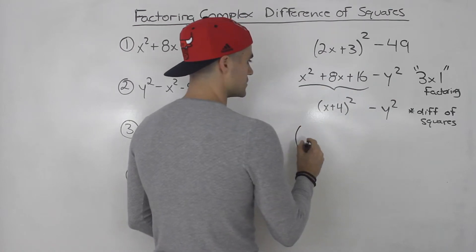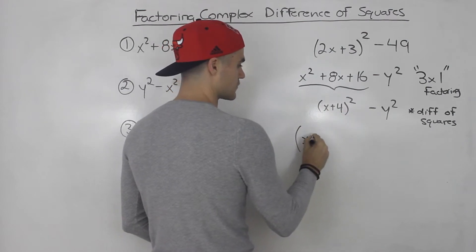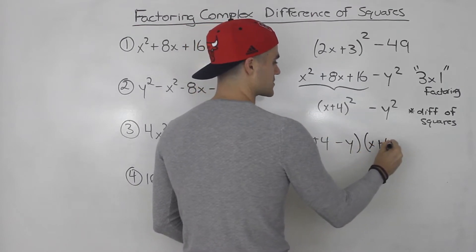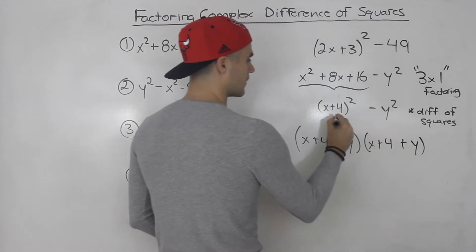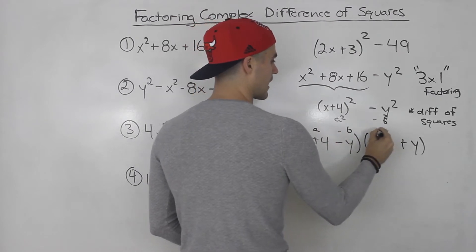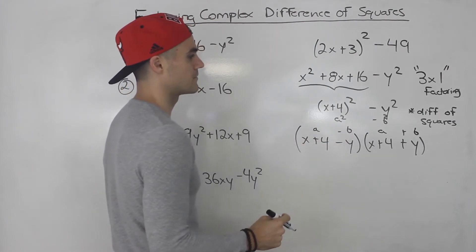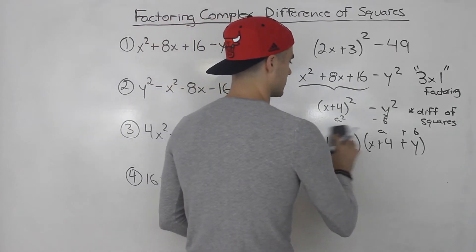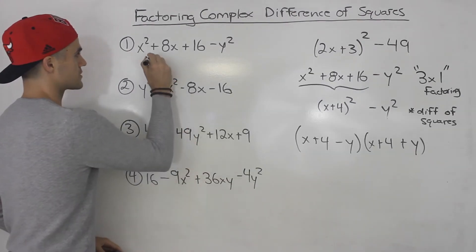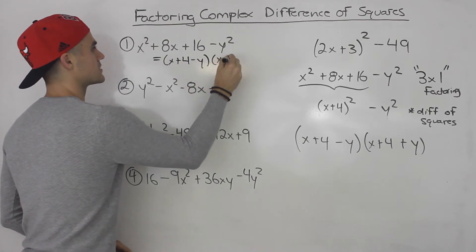This takes the format a squared minus b squared. The square root of this whole expression is just x plus 4, and then we subtract the square root of that expression, which is just y, giving us x plus 4 plus y. So a squared minus b squared factors as a minus b times a plus b, where a is x plus 4 and b is y. You can't factor any further, so the final answer is x plus 4 minus y, times x plus 4 plus y.